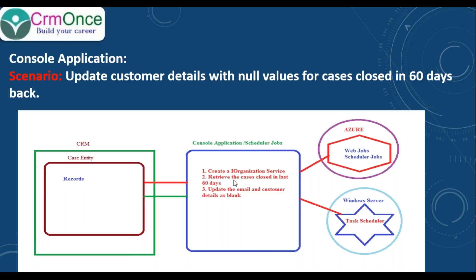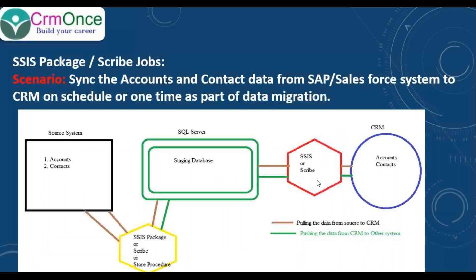In the console application, you need to create a CRM IOrganizationService and retrieve all the relevant records using a QueryExpression or FetchXML. Once retrieved, you update the email and customer details on the case — making all those fields blank. Once you develop this console application, you can deploy it in two ways.